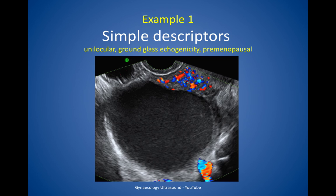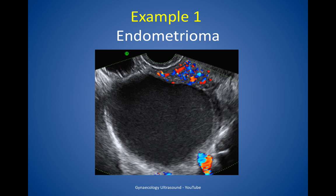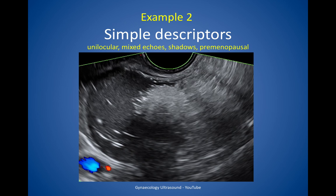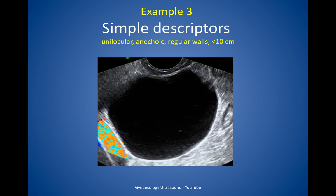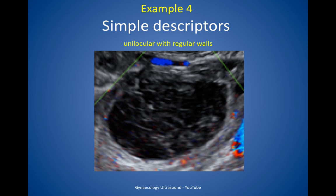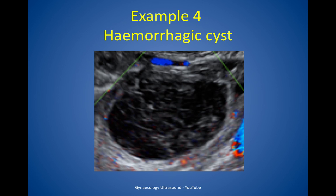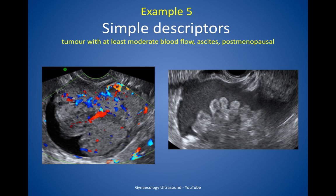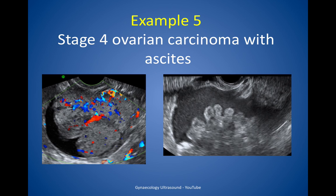In this first example, this is a unilocular cyst with ground glass echogenicity in a pre-menopausal woman — on simple descriptors this is an endometrioma. This mass is unilocular with mixed echogenicity and shadowing in a pre-menopausal woman — on simple descriptors this is a dermoid. This mass is unilocular anechoic with regular walls less than 10cm — on simple descriptors this was a serous cyst adenoma. This cyst is unilocular with regular walls — it was a hemorrhagic cyst. This is a tumour with at least moderate blood flow, ascites in a post-menopausal woman — on simple descriptors this was ovarian carcinoma.